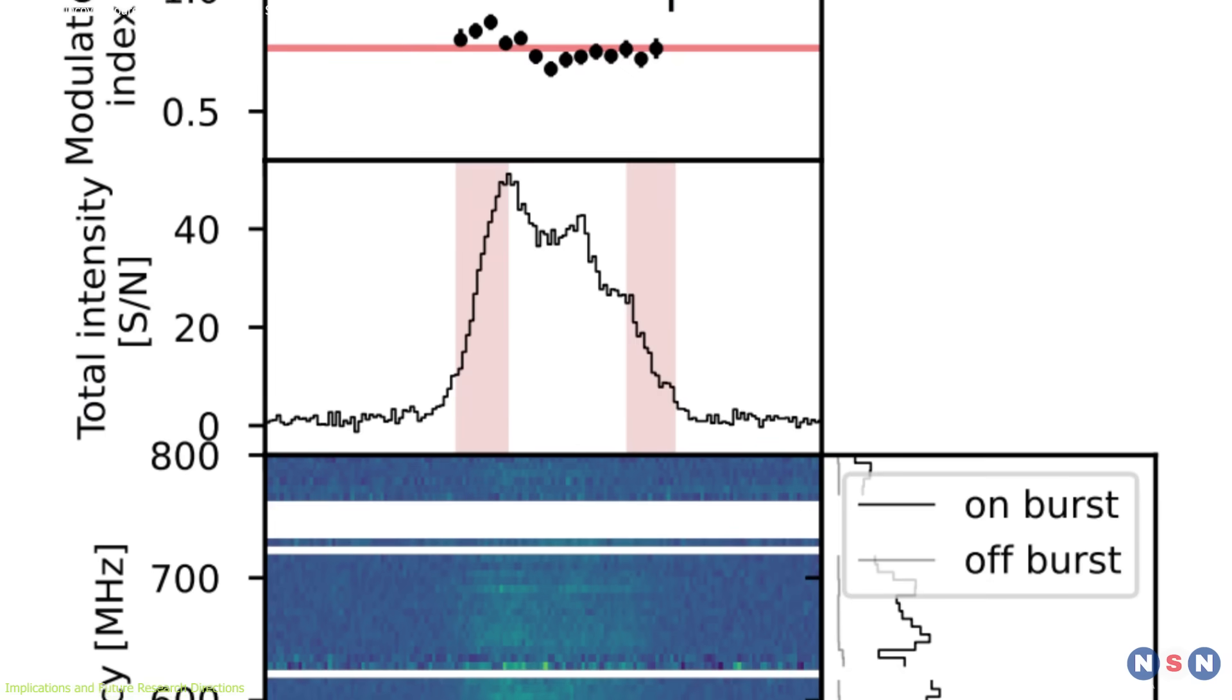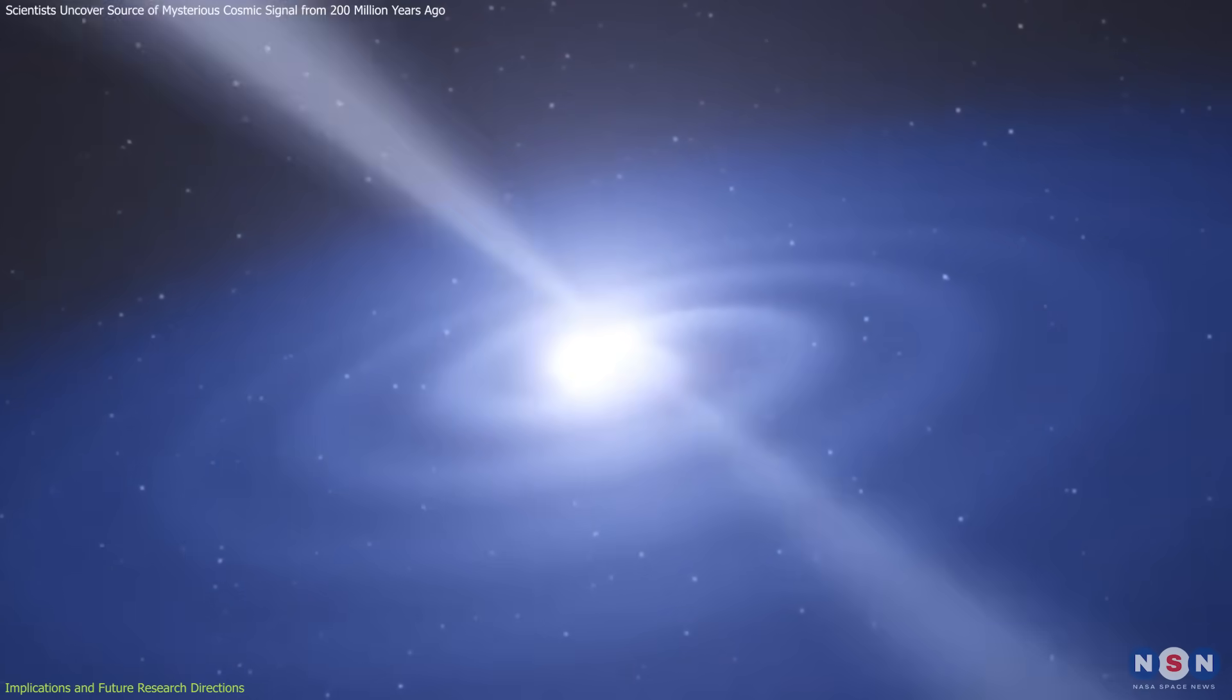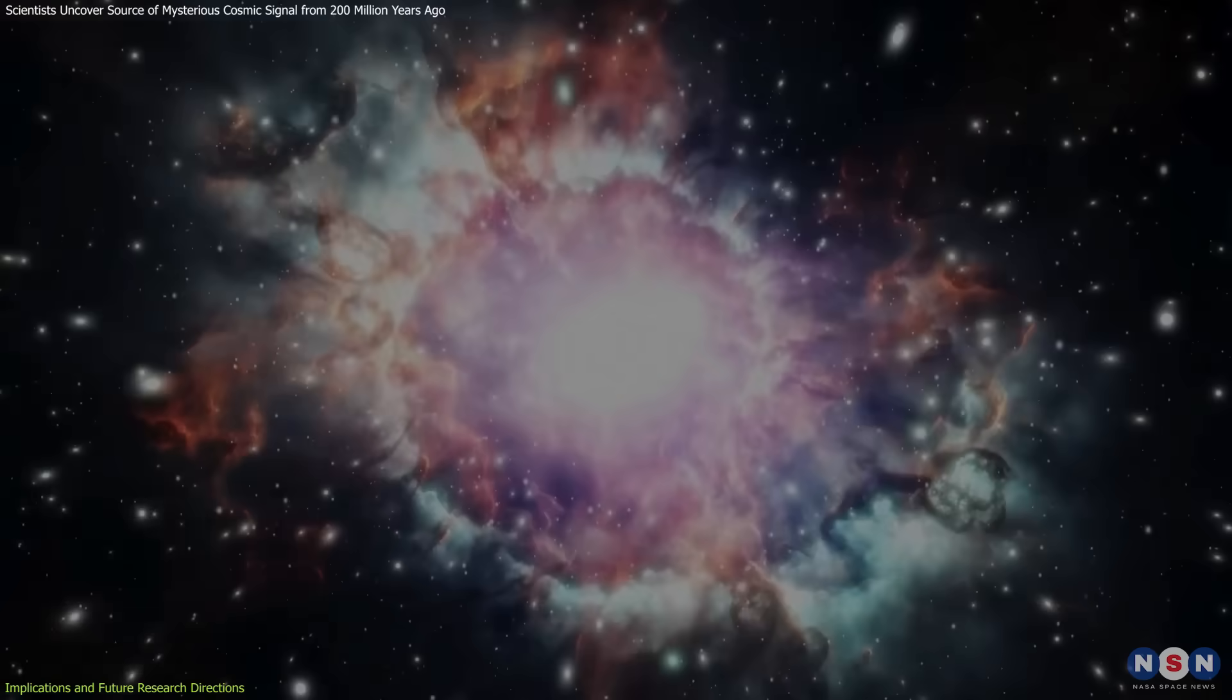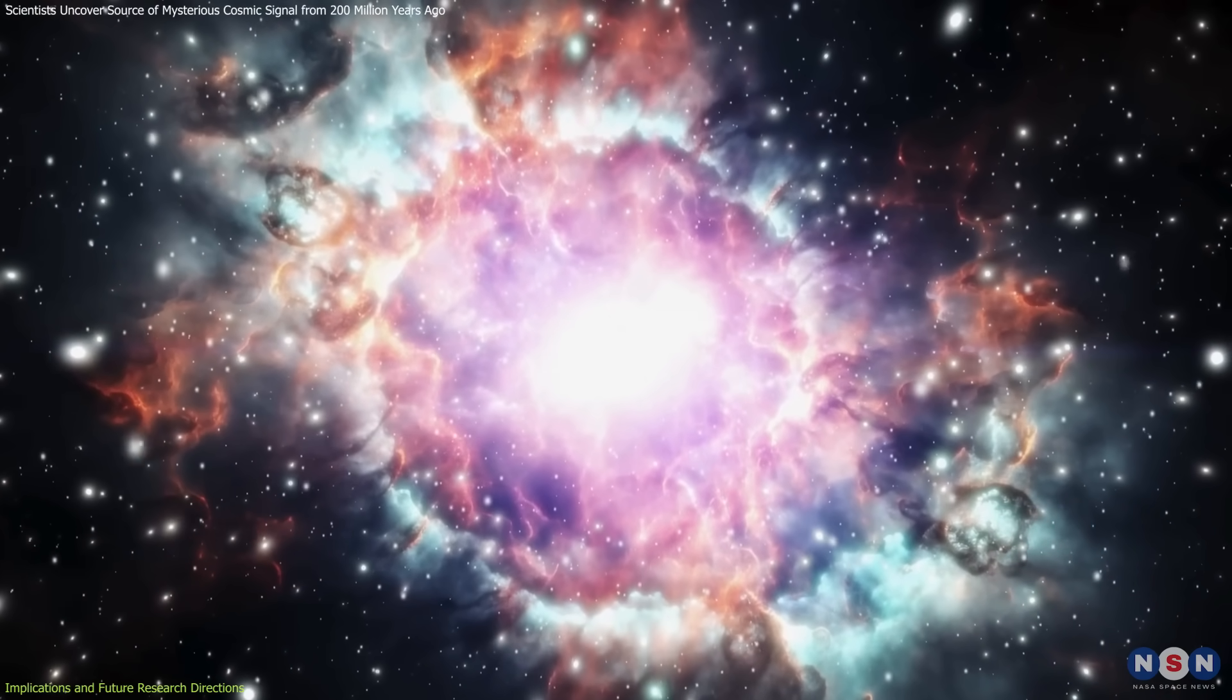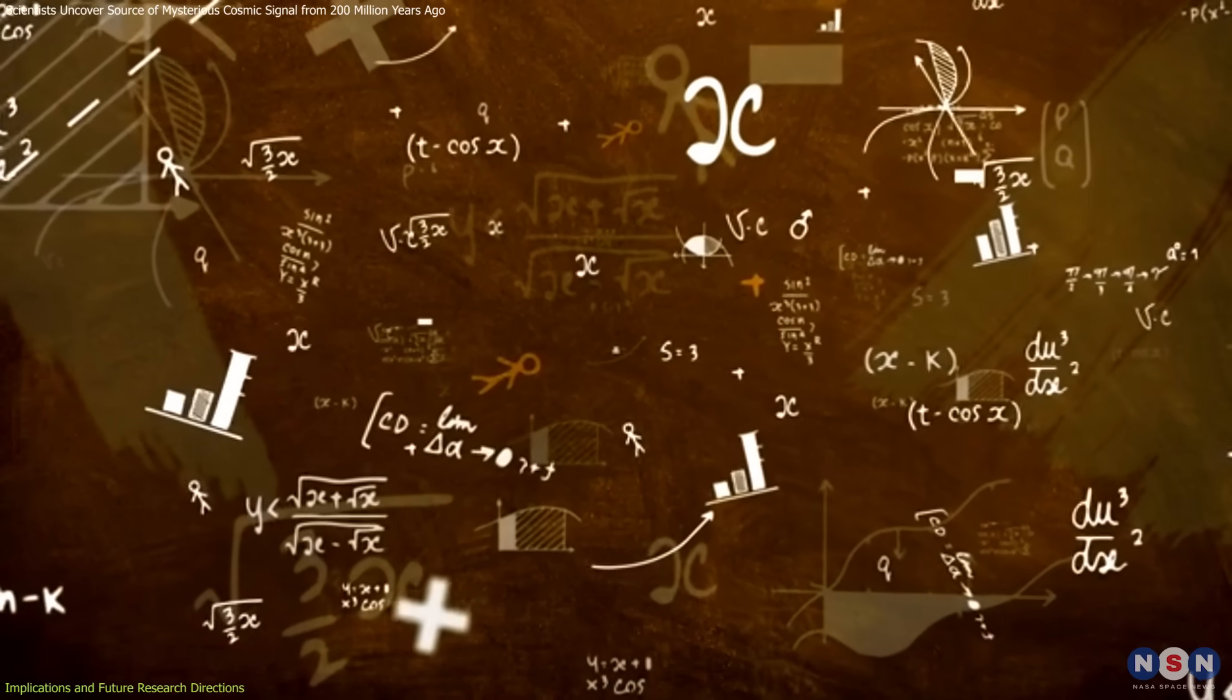The ability to trace an FRB to a region just 10,000 kilometers from its source also demonstrates the power of modern observational techniques. This level of precision allows scientists to study the behavior of matter and energy in extreme conditions, offering insights into fundamental physics.